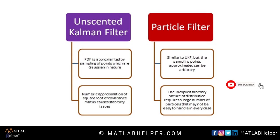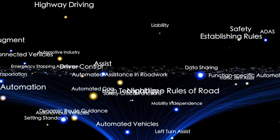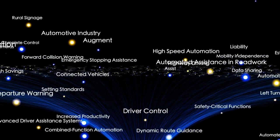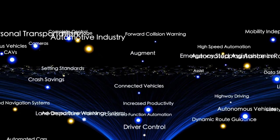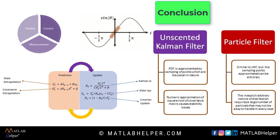The unscented Kalman filter and particle filter are used as non-linear state estimators. Kalman filter finds its use in object tracking, navigation systems, motion-based object tracking, and computer vision. We saw how the Kalman filter is computationally efficient and requires limited memory, and that the extended Kalman filter can handle small non-linearities. In the unscented Kalman filter, the PDF is approximated by sampling of points which are Gaussian in nature, and to account for the arbitrary nature of the non-linear system, a particle filter is designed.